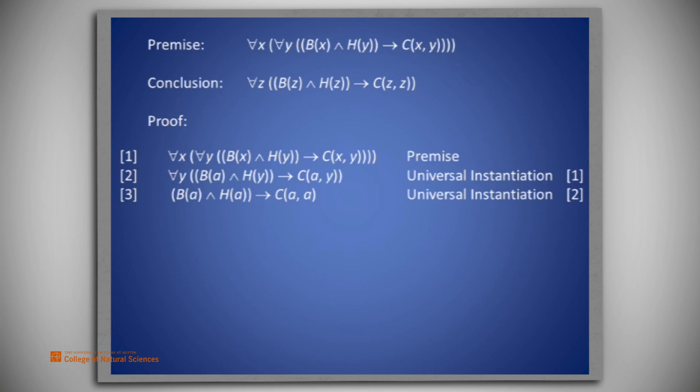Finally, we generalize the arbitrary element A in line 3 to a universal Z to say on line 4, for all Z, if B of Z and H of Z, then C of Z and Z. This concludes the proof.